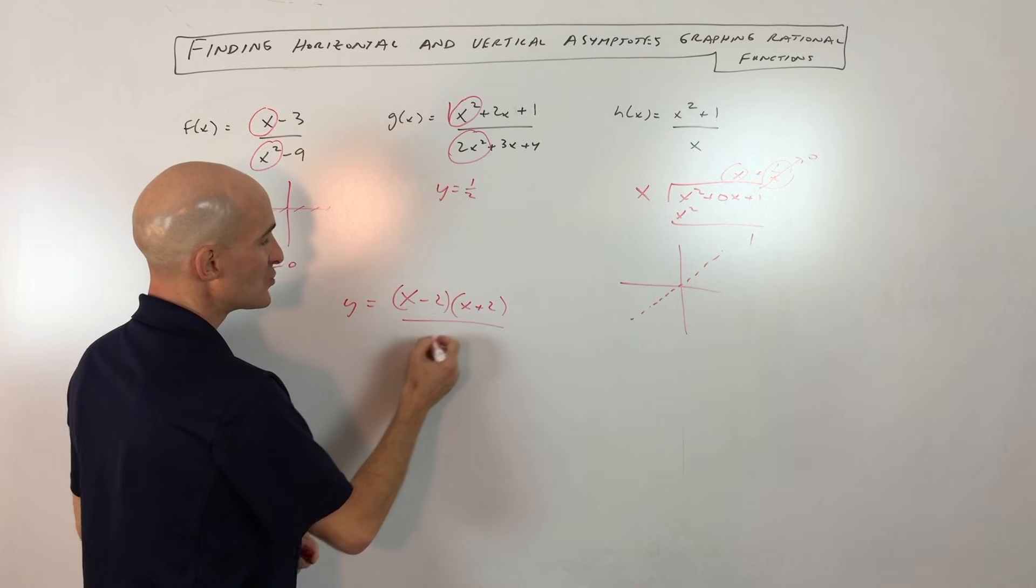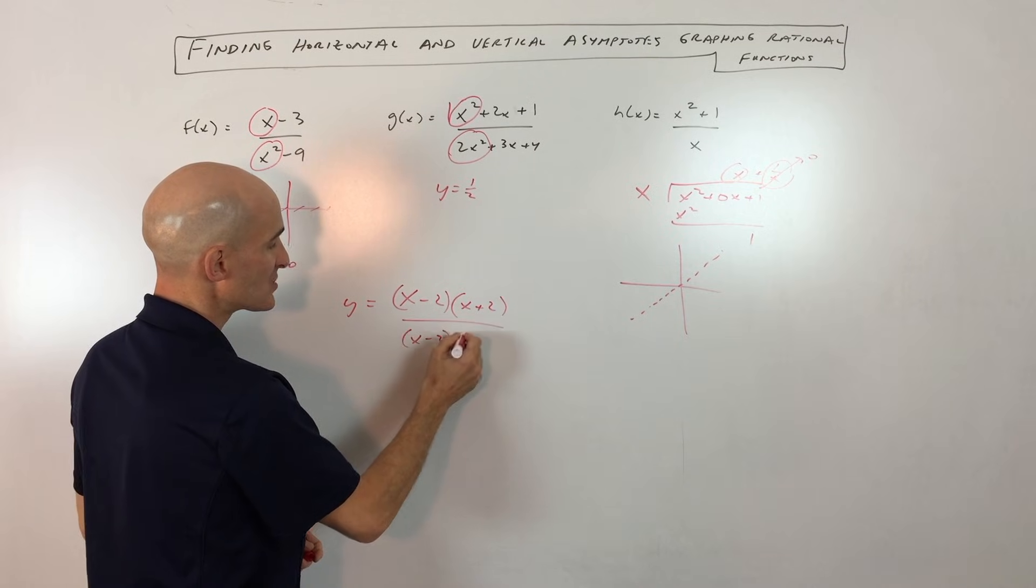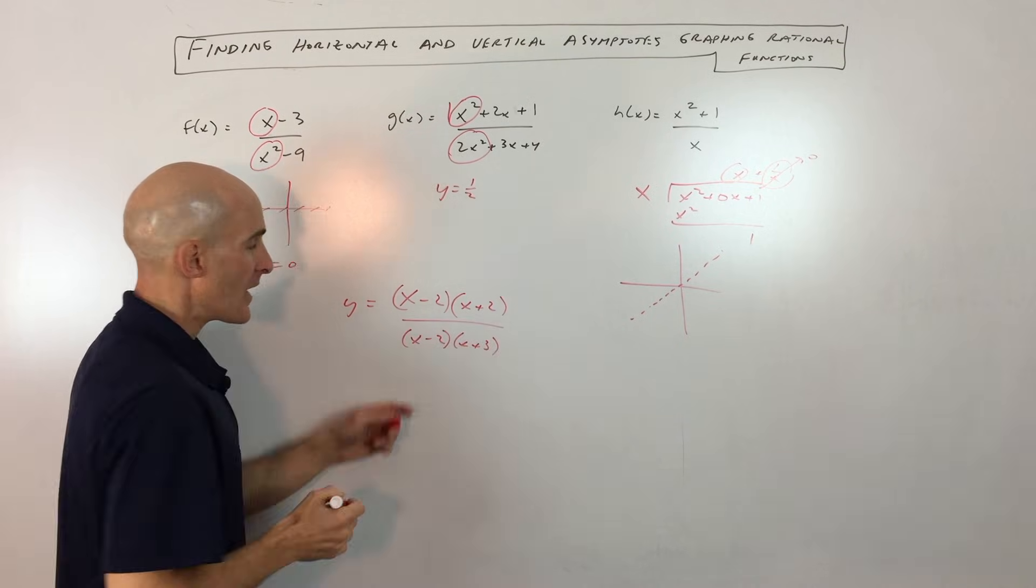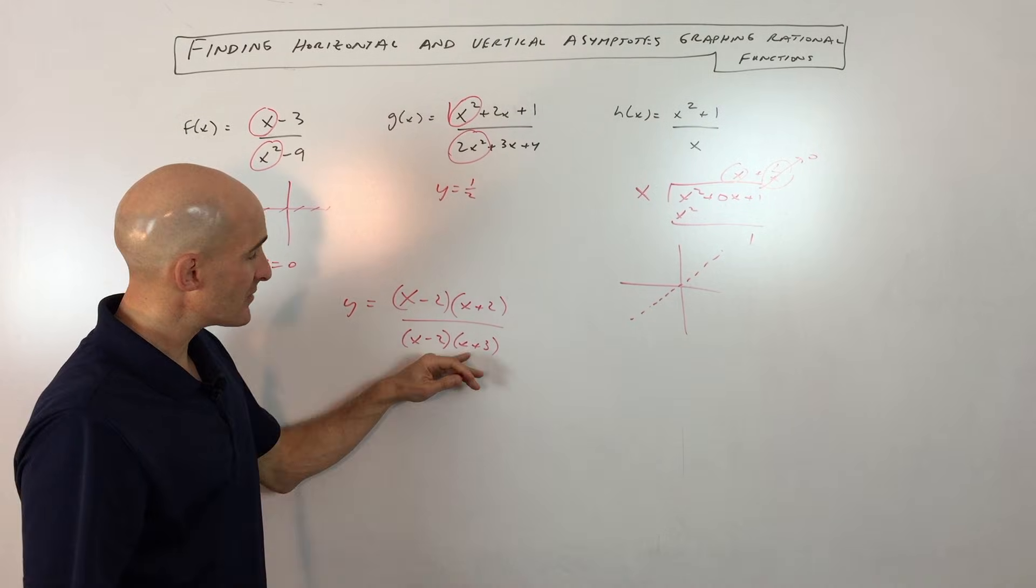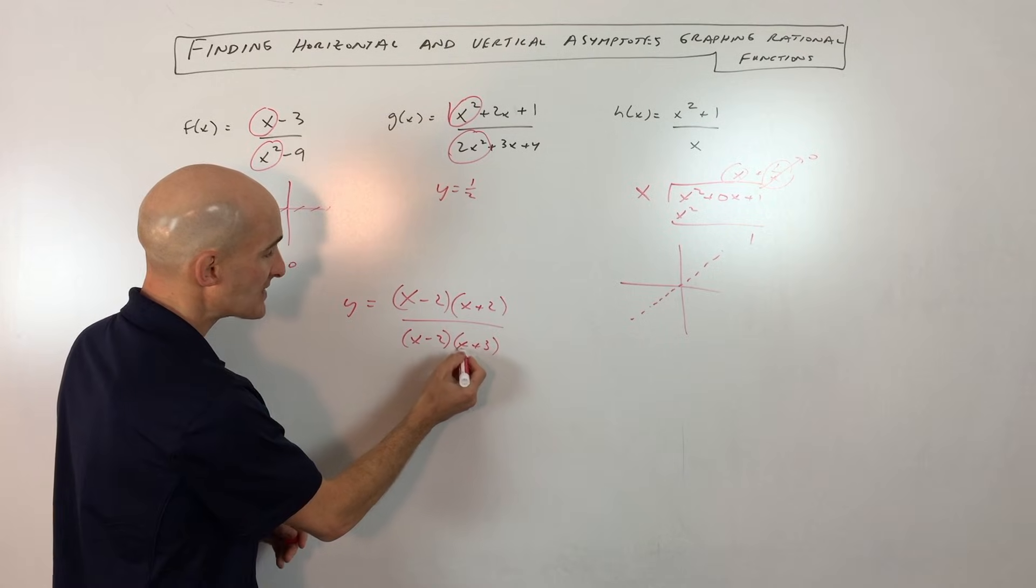Let's say you get something like this: x minus 2 over (x plus 2)(x minus 2)(x plus 3). Now when you look at the denominator, that's how you analyze the vertical asymptotes. You can't divide by zero. So here you can see that x can't